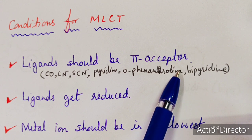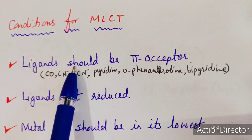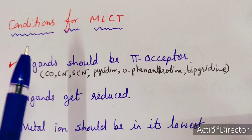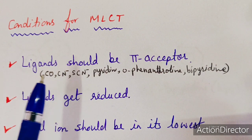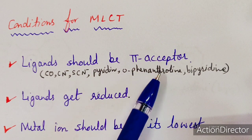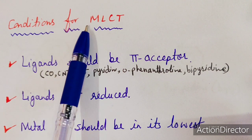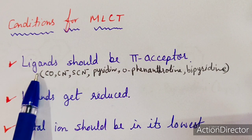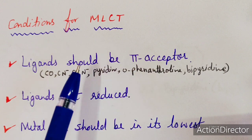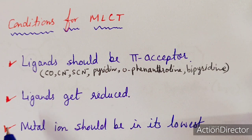In the case of LMCT transitions, the ligands were sigma donors, but in MLCT, the ligands must be pi acceptors. Pi-acceptor ligands include CO, CN⁻, SCN⁻, pyridine, orthophenanthroline, and bipyridine. When these ligands are present in the complex, they cause MLCT type transitions. When the ligand receives electrons from the metal atom, the ligand gets reduced.